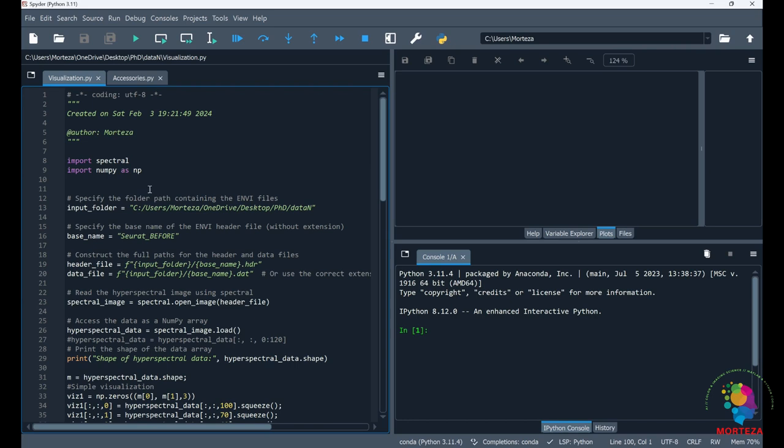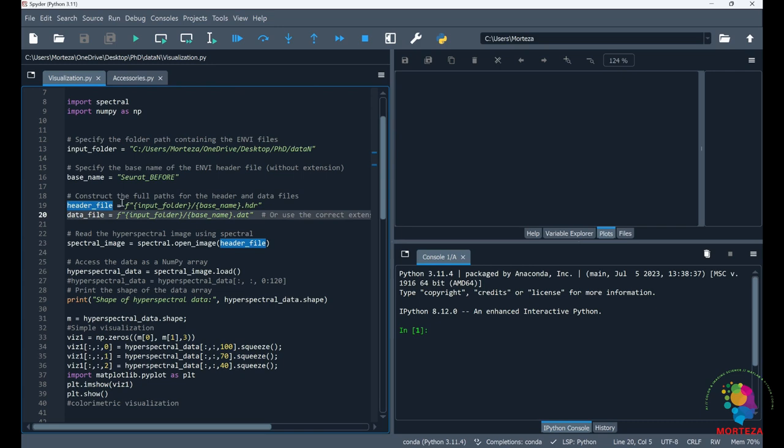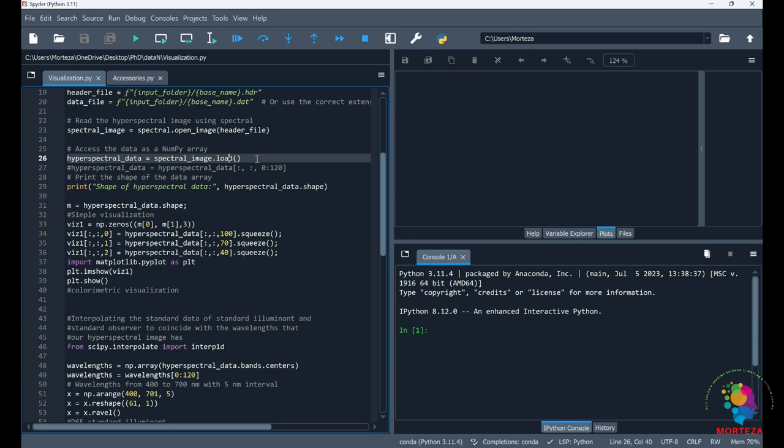So here is the code for this video. This is where my hyperspectral data is located. As you can see, the hyperspectral data is in NV format. First, I need to specify the header file and then the data. And then I use the spectral library to read in the hyperspectral image, and I'm going to access that hyperspectral image as a NumPy array here.